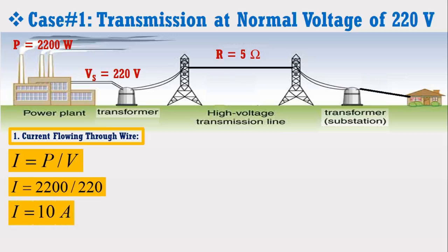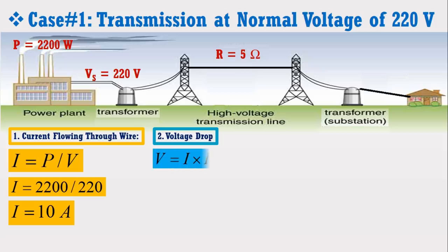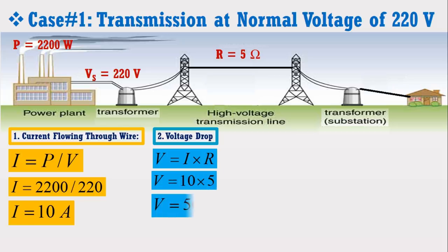Now we are going to calculate the voltage drop in the transmission line. The voltage drop is given by V = I × R. Putting the values of I and R in the above formula, we get the voltage drop in the line, which is 50 volt.